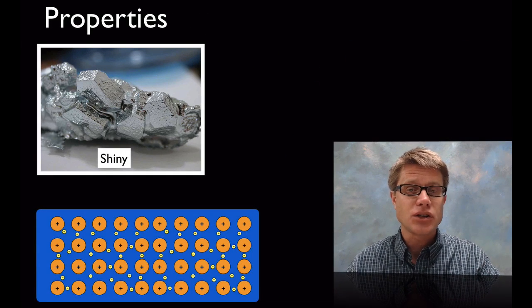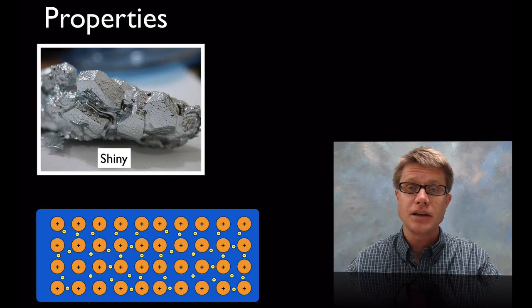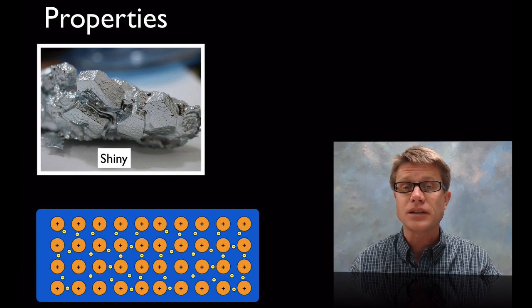Number one, they're shiny. Why are metals shiny? It's because they have all these free electrons on their surface. And so as light hits it it's able to absorb some of that and reflect a lot of that light.